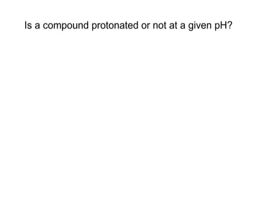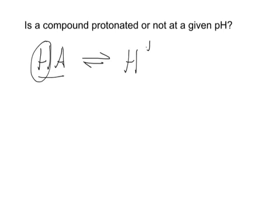And what we can write, for example, is we have a compound, let's say HA, and this would be the protonated form because it has a proton here. And of course it can give off a proton and becomes the unprotonated form, that's this one here.